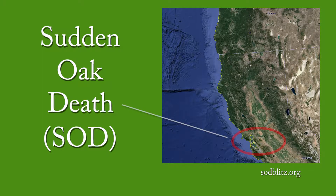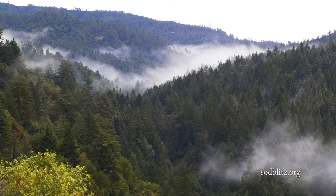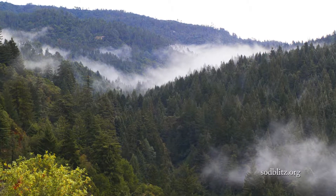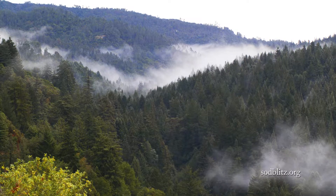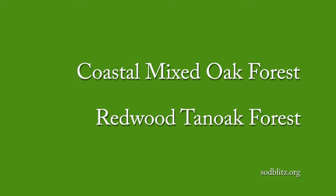Sudden oak death is an exotic disease that arrived in California in the 80s, and when it arrives in a site it can kill almost all of the oaks in about just a decade. The SOD pathogen was introduced multiple times in Northern California around the greater San Francisco Bay Area and at least one time in Southern Oregon. From these original introduction sites the pathogen is spreading in California and in Southern Oregon. Almost all findings of the pathogen are in two different types of habitats: the coastal mixed oak forest and the redwood tan oak forest.